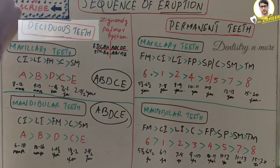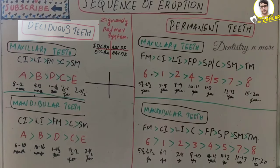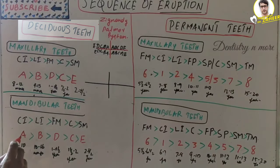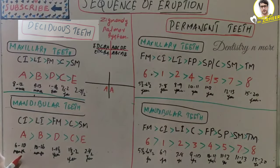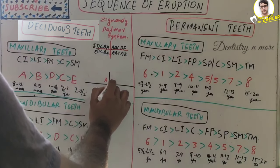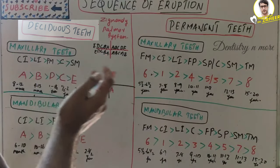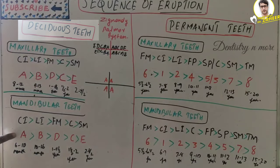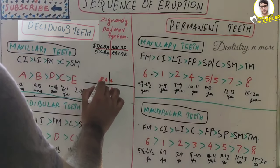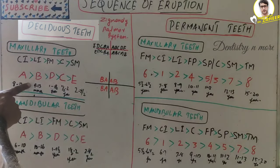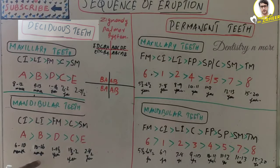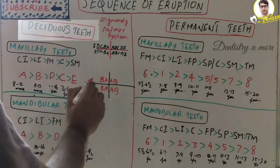When we take maxilla and mandible together, the first teeth to erupt into the oral cavity are the mandibular central incisors — the two lower central incisors. Then comes the maxillary central incisor on both sides. Sometimes there may be a small month gap, but the first teeth to erupt in the baby's oral cavity are the lower central incisors, then the maxillary central incisors, then the maxillary lateral incisors, then the mandibular lateral incisors.